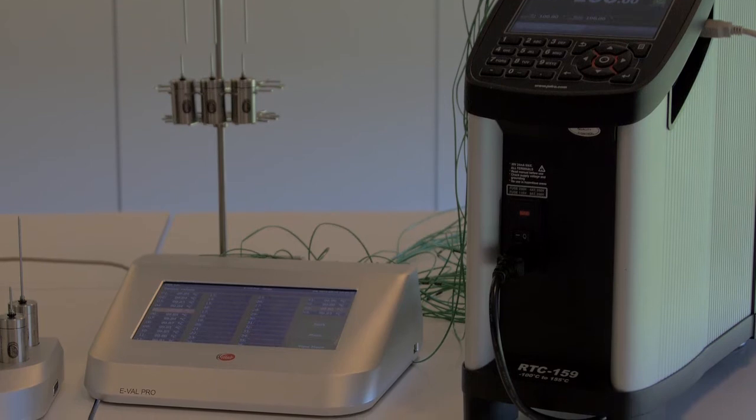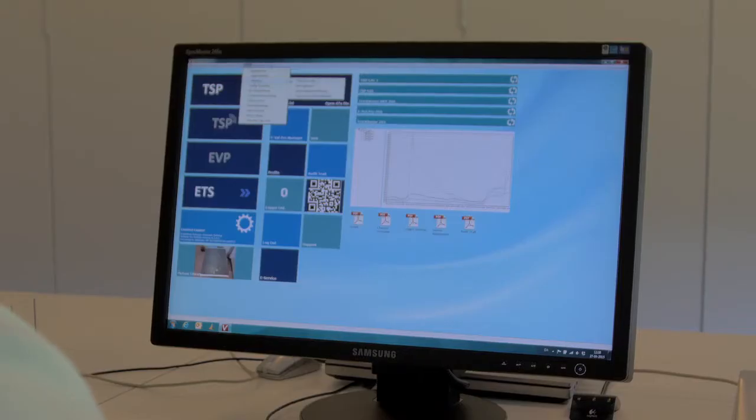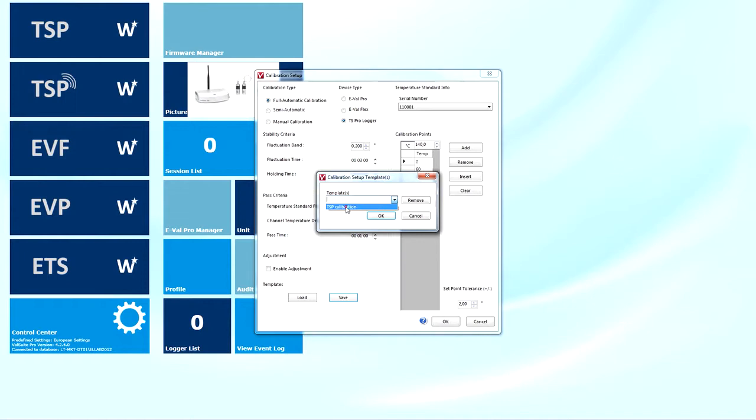The ValSuite Pro software provides an automatic setup which simplifies the calibration routine, avoids errors and saves time.